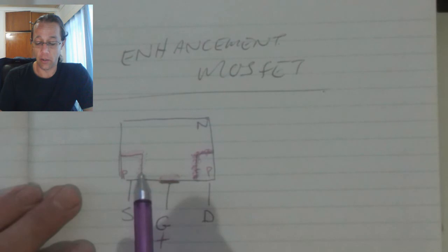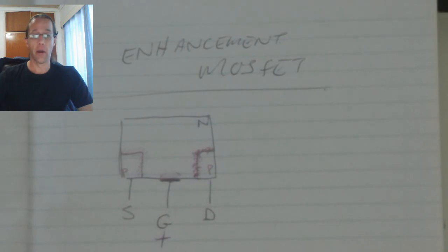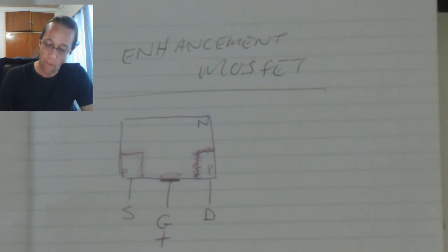Up to the point where it actually creates a connection between the drain and the source. So the operation is slightly different in the enhancement MOSFET's operation. The symbol: I am showing the N channel.